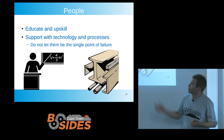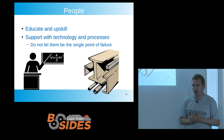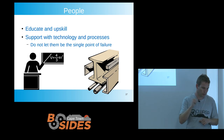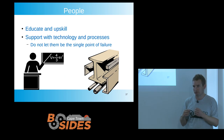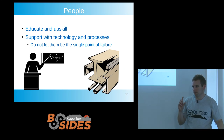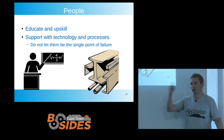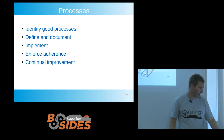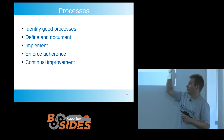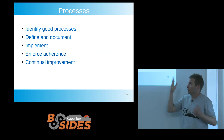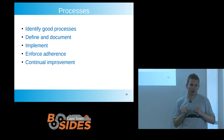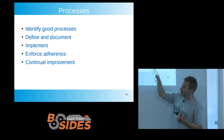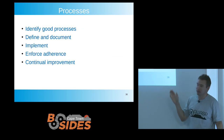People: educate and upskill them, support them with technology and processes so they don't become a single point of failure. Some MFA implementations are quite good — resistant to man-in-the-middle attacks because they know where they're supposed to be used and won't talk to a proxy server. Processes: it's a maturity model — identify, document, define, implement, force adherence by monitoring, and continuously improve.